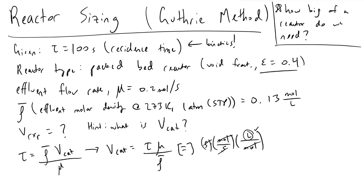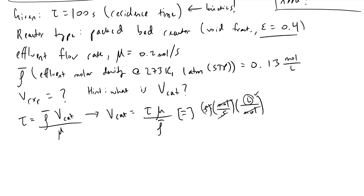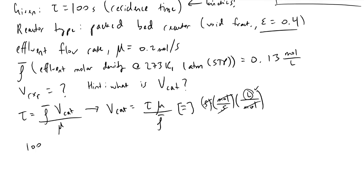The next step that we're going to make is simply plug and chug based on the numbers that we have. We know that we've got a 100 second residence time. We know that our effluent molar flow rate has a value of 0.2 moles per second, and we know that our effluent molar density had a value of 0.13 moles per liter. This tells us that the volume of our catalyst will be equivalent to 154 liters.